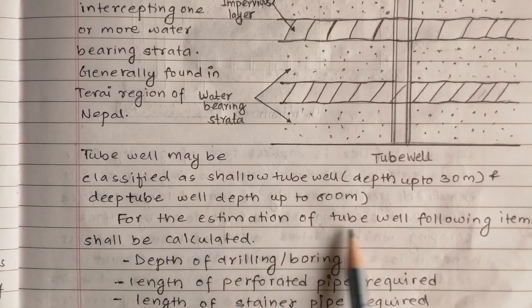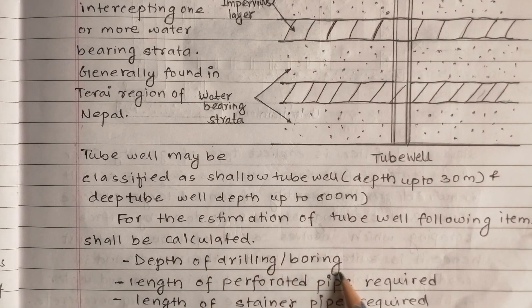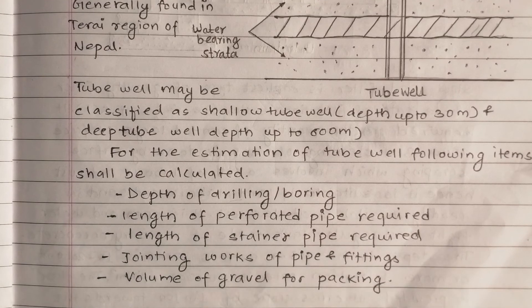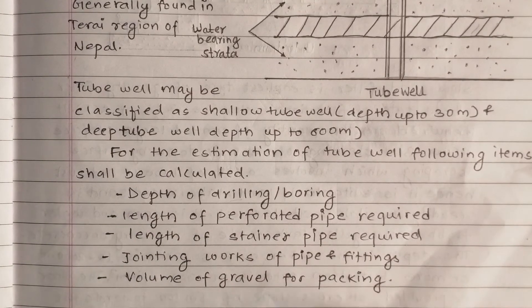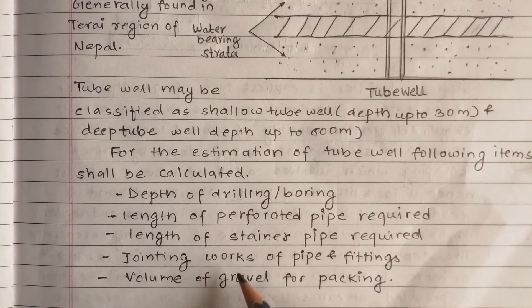For the estimation of a tube well, the following items shall be calculated: depth of drilling or boring, length of perforated pipe required, length of plain pipe required, and pipe and fittings.